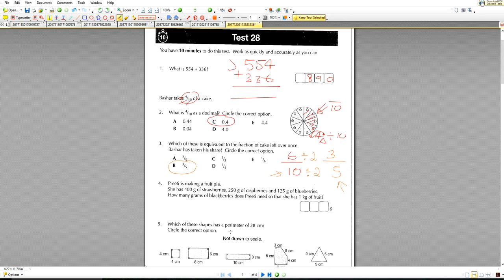Question number four. Preeti is making a fruit pie. She had 400 grams of strawberries, 250 grams of raspberries, and 125 grams of blueberries. How many grams of blackberries does Preeti need so that she has one kilogram of fruit? So we have 400, we have the 250, and the 125. And if we add all those up for question number four, that will give us a total of 775 grams so far.